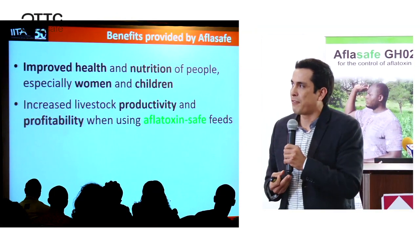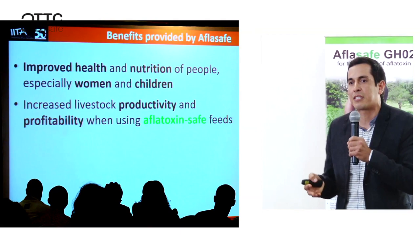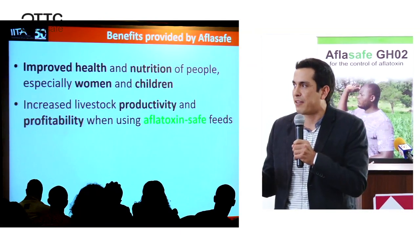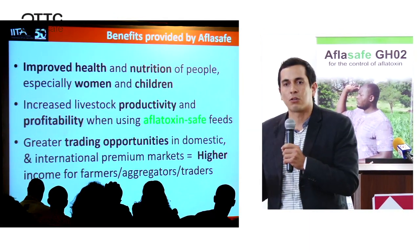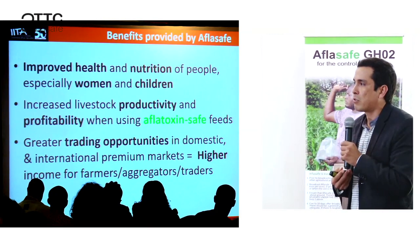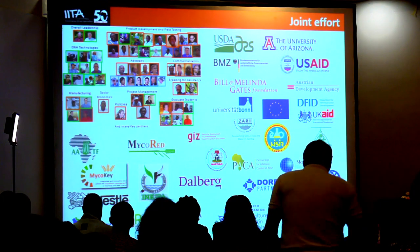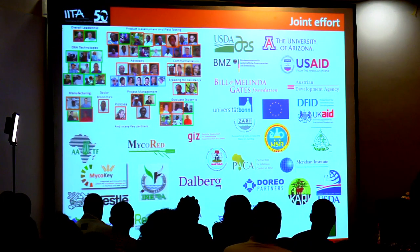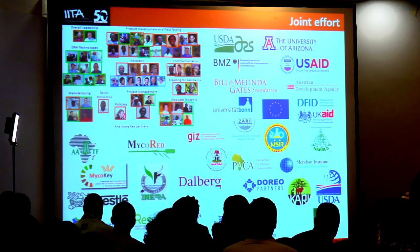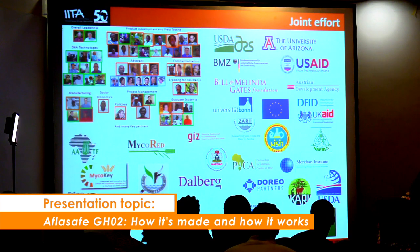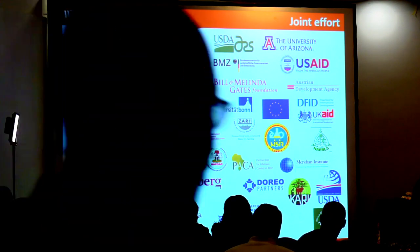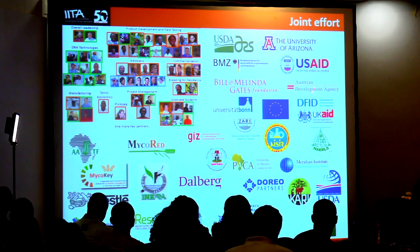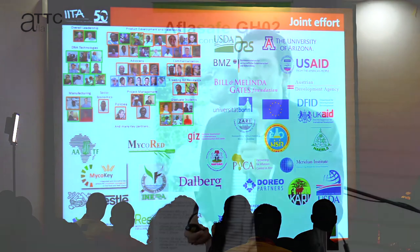Additional benefits include increased livestock productivity and profitability when using aflatoxin-safe feeds manufactured with Aflasafe-treated crops, and greater trading opportunities in domestic and international premium markets, resulting in higher income for farmers, aggregators, and traders. This has been a very large effort made possible through almost 15 years of research in Nigeria, Ghana, Kenya, Tanzania, and many other places, supported by a large number of donors and governments.